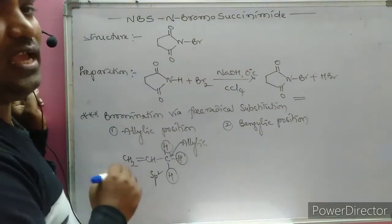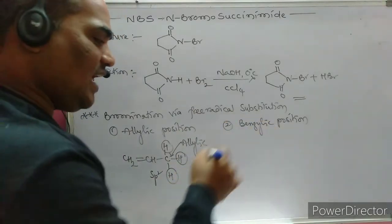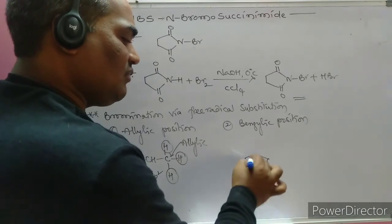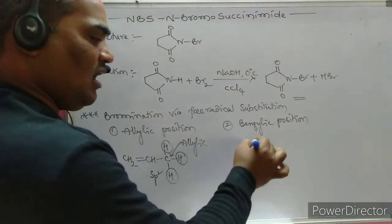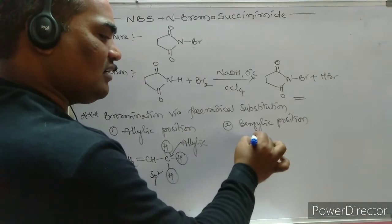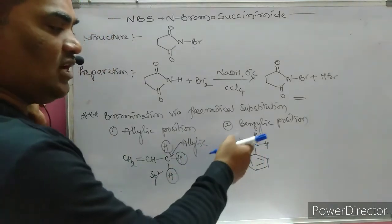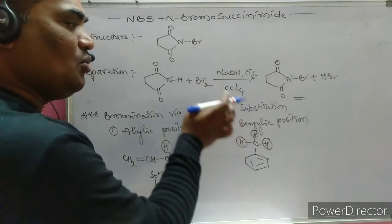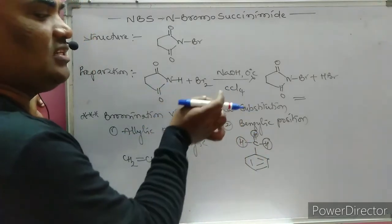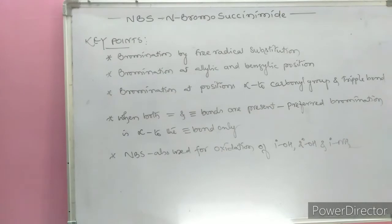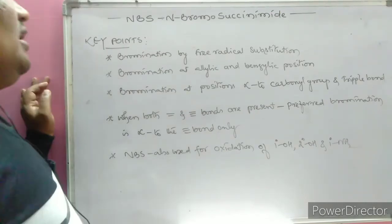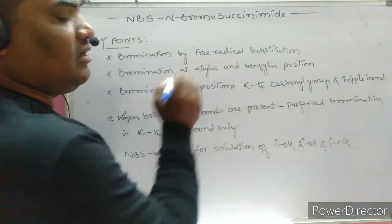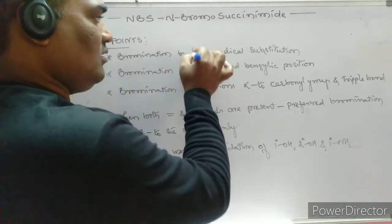The benzylic position is nothing but the next carbon atom to the benzene ring, called the benzyl carbon atom. The hydrogen atoms it holds are called benzylic hydrogen atoms. These hydrogens are also easily substituted using the NBS reagent. The key point is that NBS performs bromination by free radical substitution.